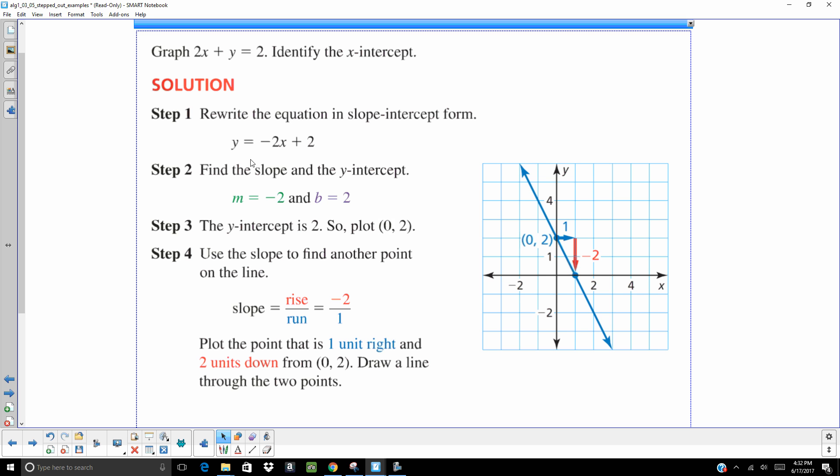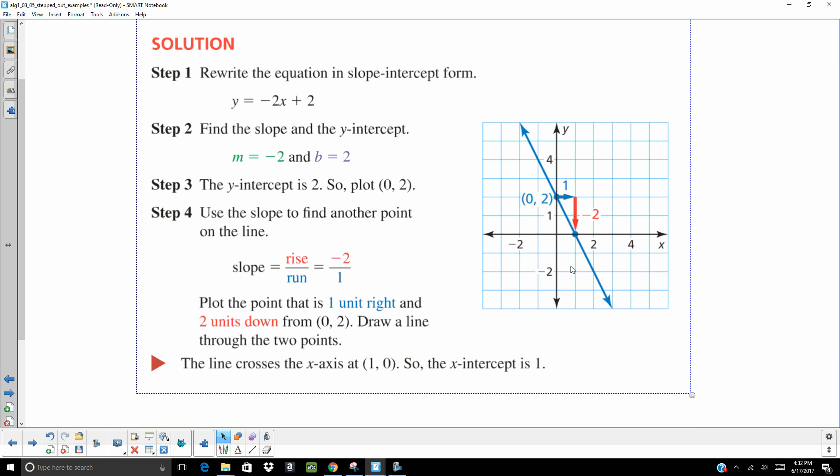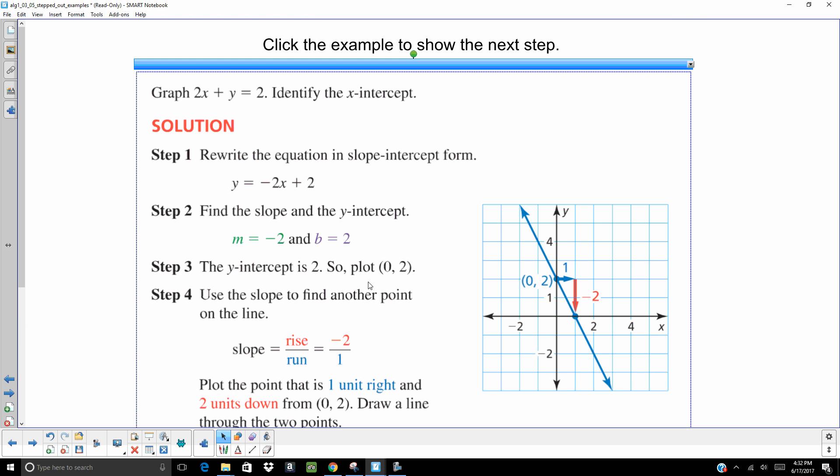So let's go ahead and talk about this. Once they rewrote it in slope-intercept form of y equals negative 2x plus 2, my slope is negative 2. My y-intercept is 2. So the first thing I'm going to do is plot my y-intercept, which is 2. Then my slope is negative 2. That's rise over run. So I'm going to go down 2, right 1. So from that point, right 1, down 2. It crosses at 1, 0. So the x-intercept is 1. I actually think the better way of doing that would be to let y equal 0 and solve it that way. But this way works as well, too.